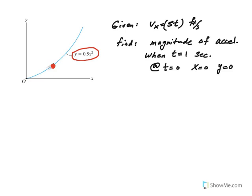We are given that the x component of velocity is equal to 5t, so it's changing with time. What we want to determine is the magnitude of acceleration at t equal 1 second.